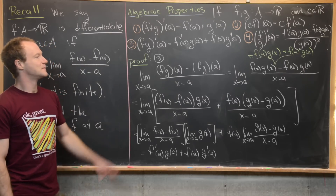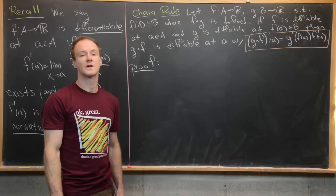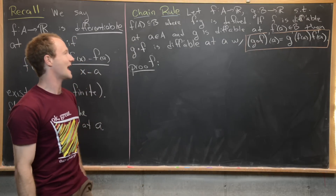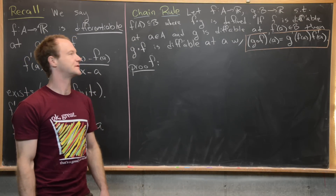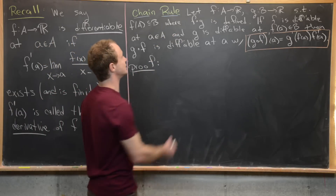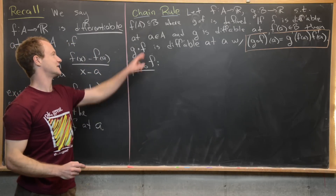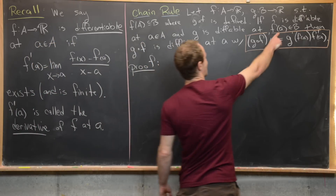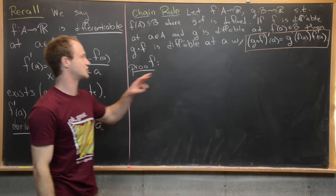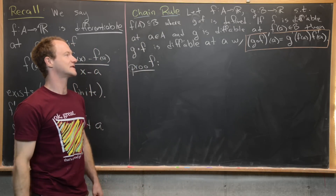Now we're going to prove the chain rule, which deals with the derivative of a composition of functions. We let f be a function from A to ℝ, g be a function from B to ℝ, with the image of A being a subset of B, so that g composed with f is defined. The claim is: if f is differentiable at a, and g is differentiable at f(a) — which lies inside B — then g∘f is differentiable at a, and (g∘f)'(a) = g'(f(a))·f'(a).